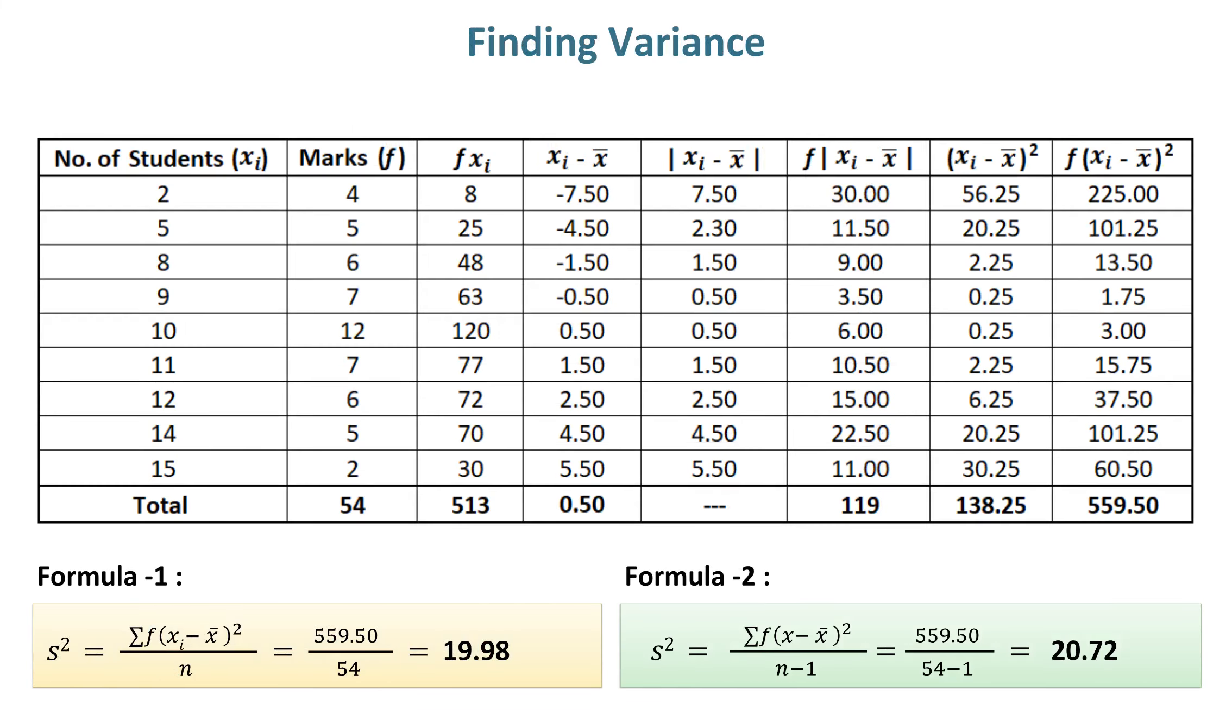Finding variance. The numerator value for finding variance is 72,960 and denominator value is 60. Thus, the variance in this example in Formula 1 is 19.98.